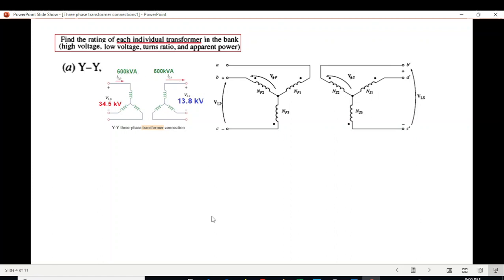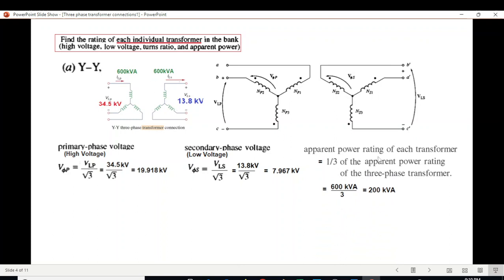Primary voltage, primary line voltage, secondary line voltage, and apparent power 600 kVA - power remains the same on primary and secondary side. We need to find the high voltage of the primary side. In Y connection, line voltage and phase voltage have a relation - the phase voltage is V_line divided by √3. So 34.5 divided by √3 equals 19.918. On the secondary side, also Y-Y, using the same formula we get secondary phase voltage of 7.967.